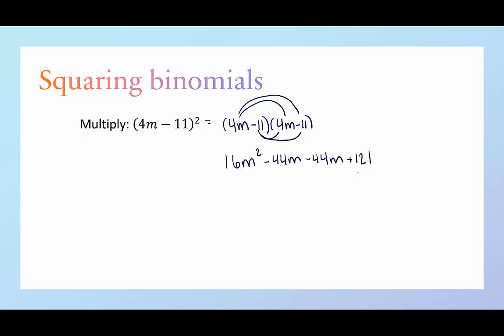With this type of binomial, the like terms are right here in the middle. I have two minus 44m's. So we'll combine those, we get 16m squared minus 88m plus 121.